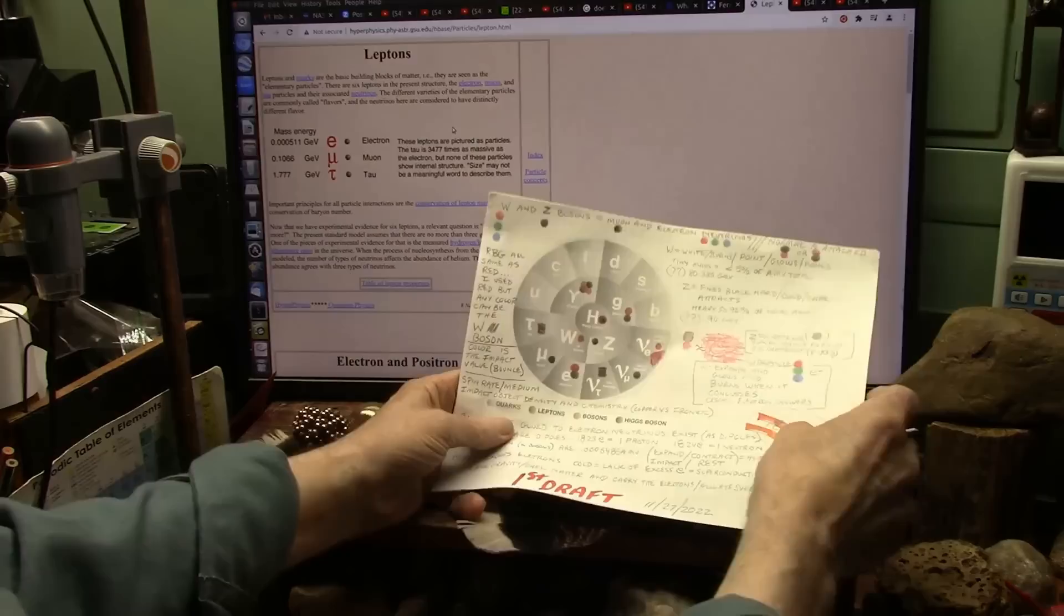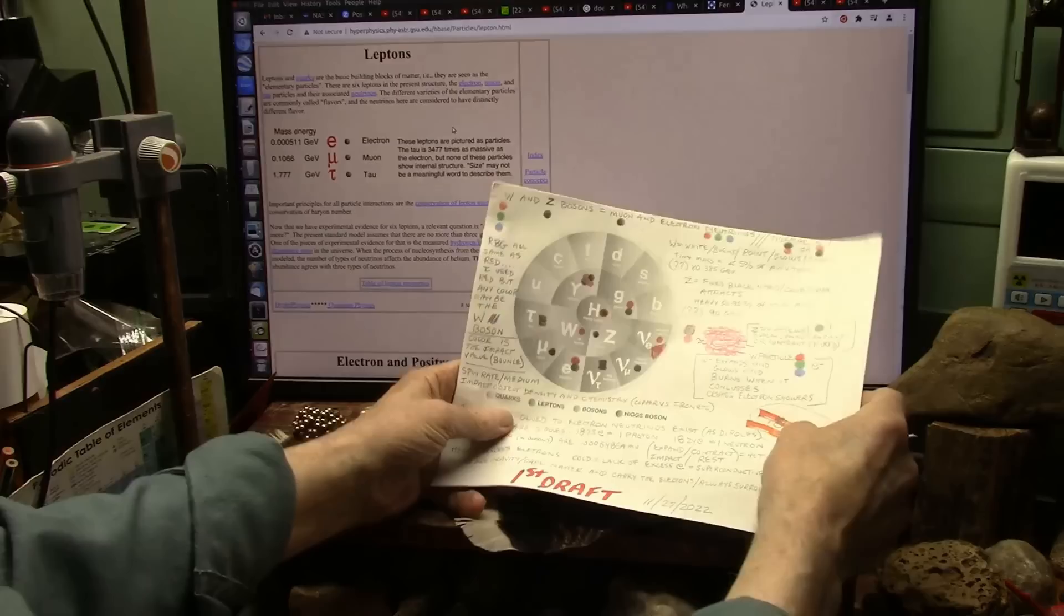Red, green, blue are all the same as red. The W boson color is its impact value, or bounce, whatever that means. Apparently they also have a medium spin rate, whatever that means. Oh, but good to know that this is only the first draft. But also, let's see, we seem to have some dots showing us what things are made of in this chart of the standard model. So Z bosons, muons, and muon neutrinos are the same thing. W bosons are the same thing as electron neutrinos and the Higgs boson. Electrons are electron neutrinos plus a muon. Tau neutrinos and tau particles are both two muons. Gluons are electrons somehow.